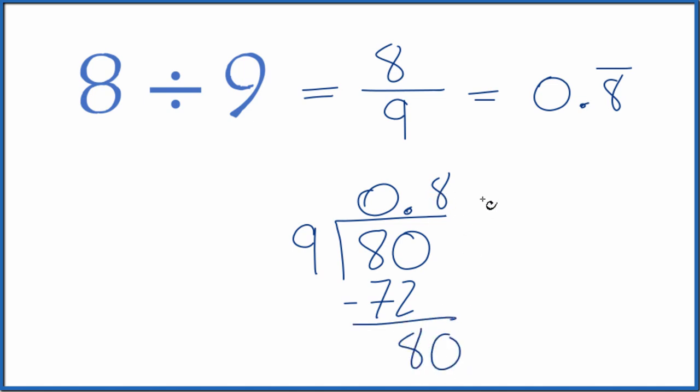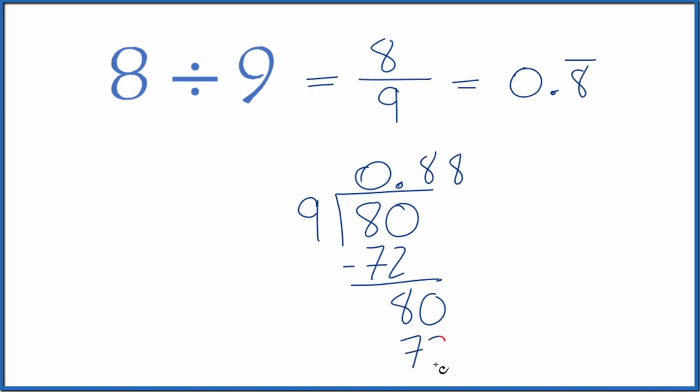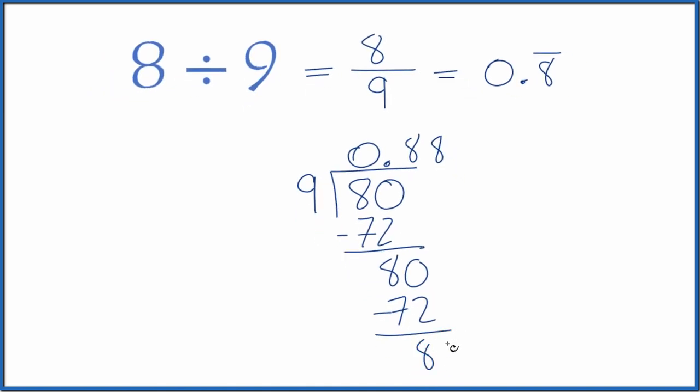Call it 80. Move over 1. 8 times 9 is 72. We subtract. We get 8. Call it 80. Move over 1. And you can see, we just keep getting 8. So that's why we put the 0.8 with the bar on it up here.